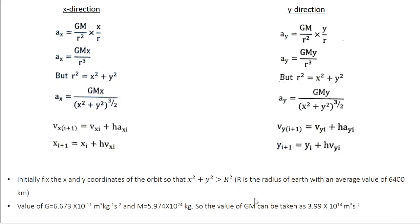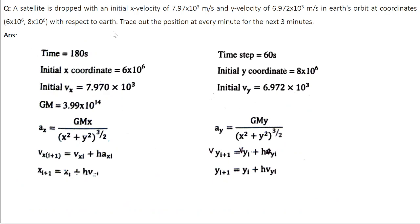Now let's do a simple problem. A satellite is dropped with an initial x velocity of 7.97×10³ m/s and y velocity of 6.972×10³ m/s in Earth's orbit at coordinates (6×10⁶ m, 8×10⁶ m) with respect to the Earth. Trace out the position at every minute for the next 3 minutes.